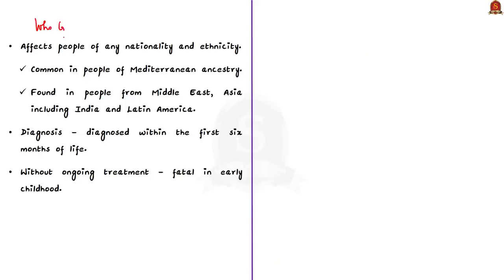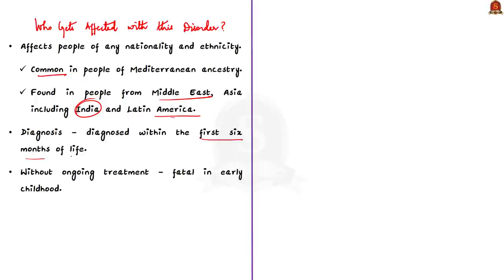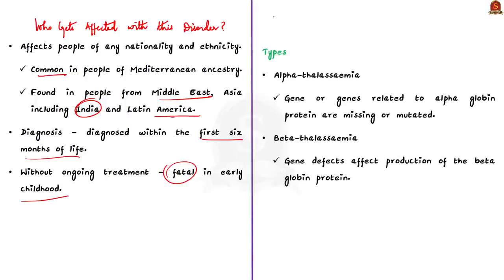Thalassemia can affect people of any nationality and ethnicity, but it is particularly common in people of Mediterranean ancestry and also found in people from the Middle East, Asia including India, and Latin America. Thalassemia is usually diagnosed within the first six months of life and without ongoing treatment can be fatal in early childhood. There are different types of thalassemia: since hemoglobin is made of two proteins — alpha globin and beta globin — thalassemia generally occurs when there is a defect in a gene controlling production of one of these proteins.